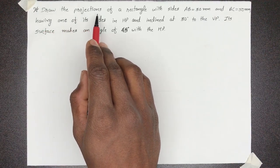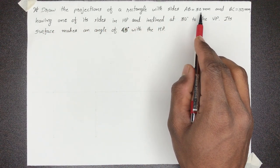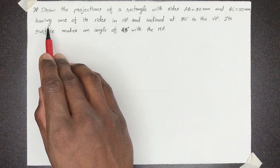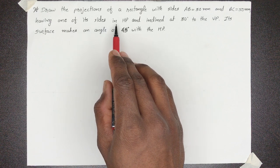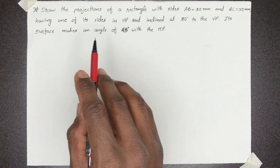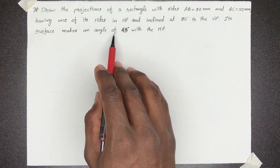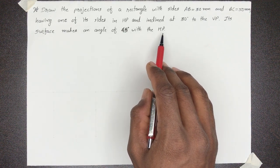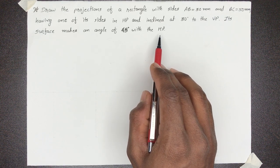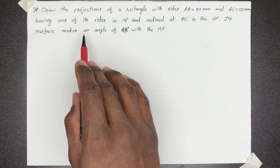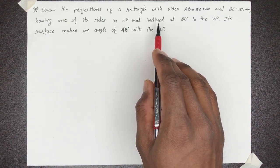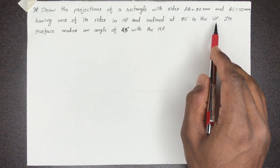Draw the projections of a rectangle with sides AB = 30 mm and BC = 50 mm, having one of its sides in HP and inclined at 30 degrees to the VP. Its surface makes an angle of 45 degrees with HP. यहाँ पे हमें दो angles provide किये हैं: surface inclination 45 degrees with HP और edge inclination 30 degrees with VP.